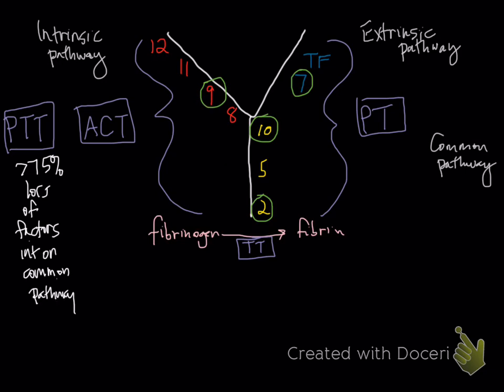So PT is the same, except it works on the extrinsic pathway and the common pathway. This means that PT will be prolonged when there's greater than 75% loss or absence of factors in the extrinsic.